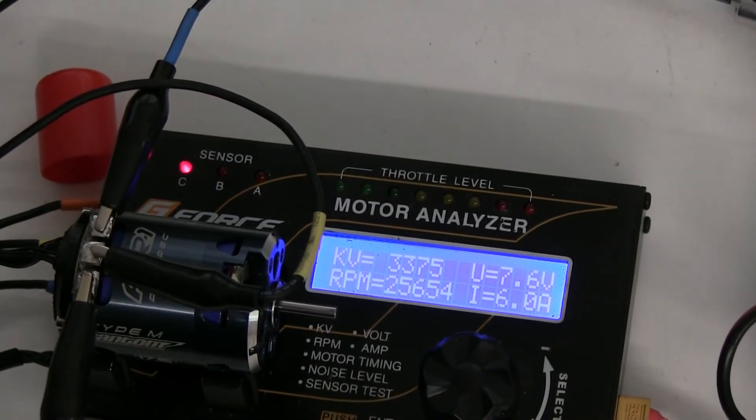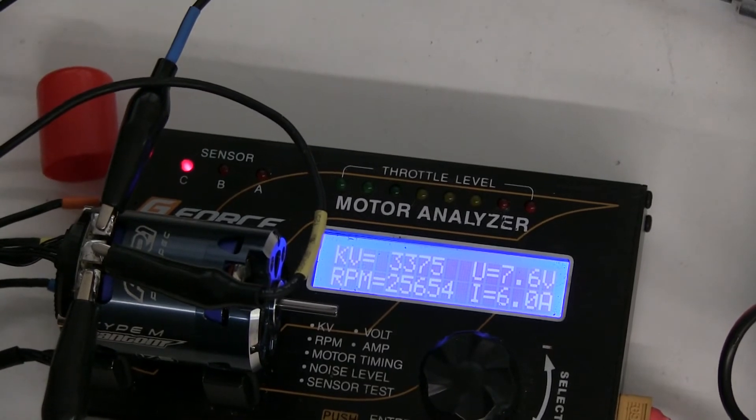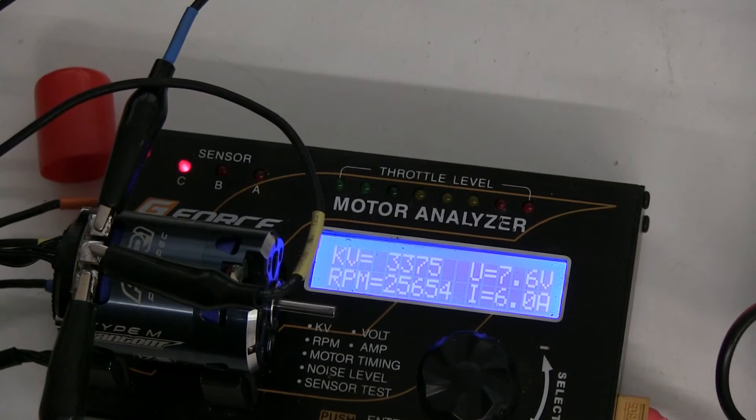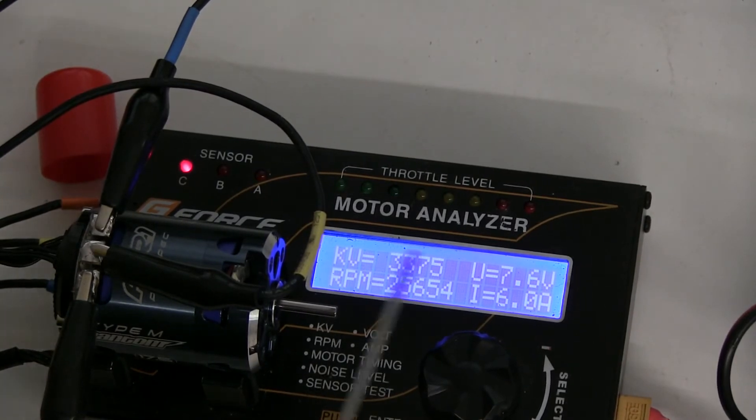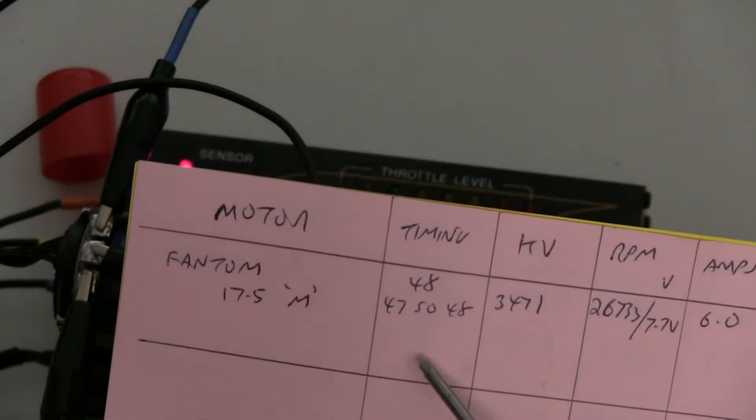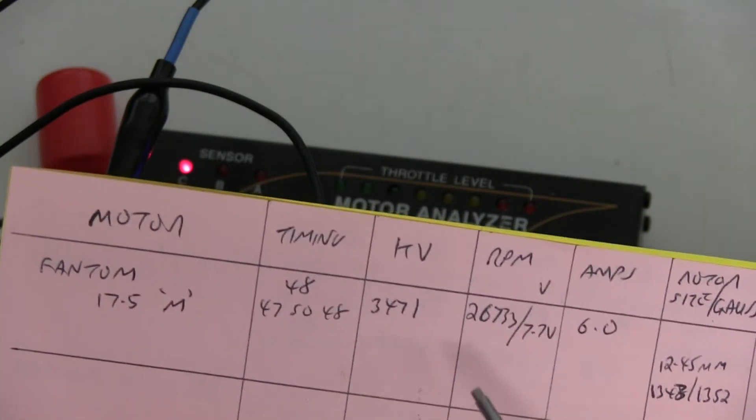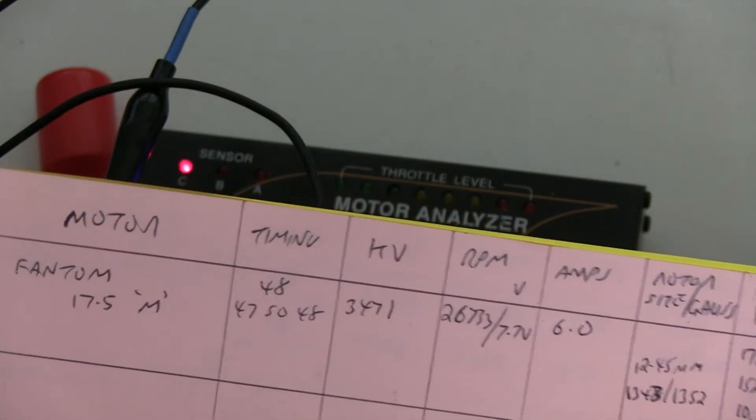OK, I've just run up the motor with the optional rotor in it. And at six amps, the revs is actually fractionally lower. The KV is 3375. When we did it with standard rotor, it was 3471. So there don't seem to be much change there.